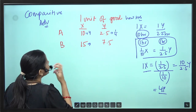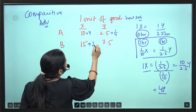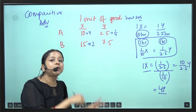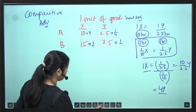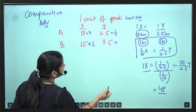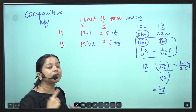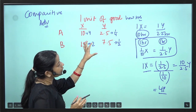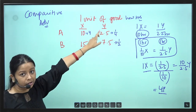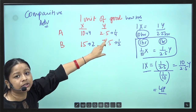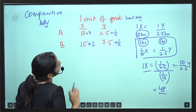For Country B, 7.5 hours are needed — double the hours for Y compared to X. So if you were making 1X, instead you could have made 2Y. The opportunity cost of 1X in Country B is 2Y. And the opportunity cost of 1Y is 1/2, which is 0.5.